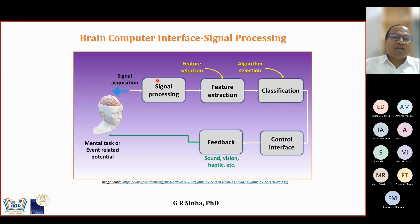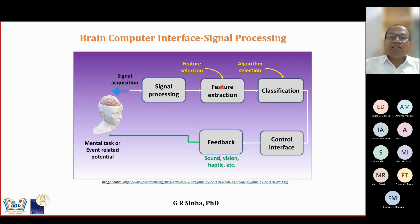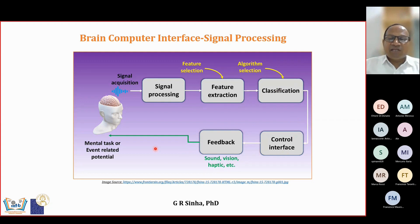After applying signal processing, we extract appropriate features and choose a suitable number of features — that is feature selection. The features are then subjected to classifiers. We can use any suitable algorithm to classify those features. The control interface can either provide commands or some feedback signal that goes to the brain.